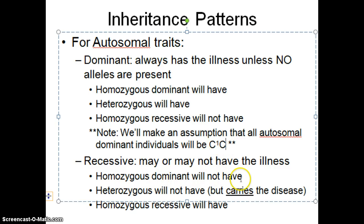For autosomal recessive: homozygous dominant won't have the disease, heterozygous will not have it but they carry it — it's silent because it doesn't do all the talking. The homozygous recessive will definitely have it, because they have two recessive alleles with no dominant allele around, so that person actually has the disease.